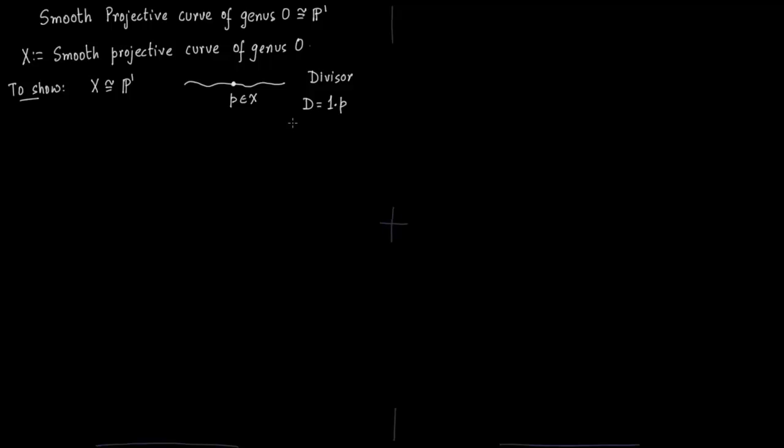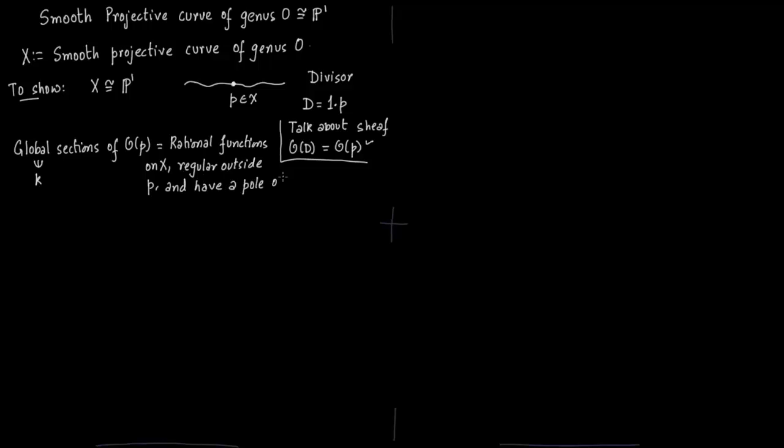You pick a point p in the variety x. So the divisor here is 1 times p. We are going to talk about this sheaf O, or you can rewrite it as O of 1 times p. What are the global sections of this sheaf? Obviously constants are contained in the global sections. Also we have all the rational functions on x which are regular outside p and have a pole of order less than equal to 1 at p.